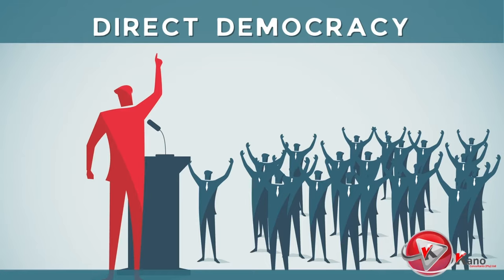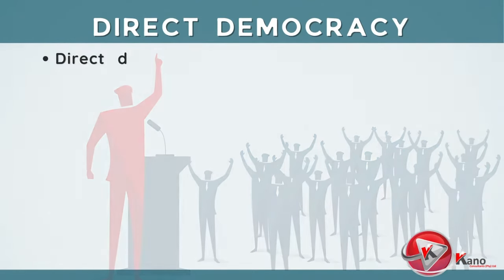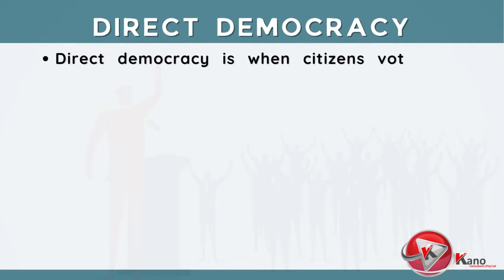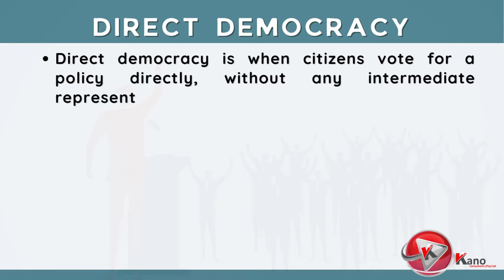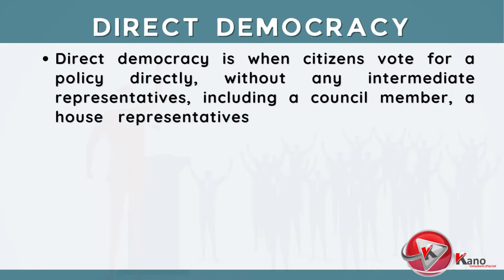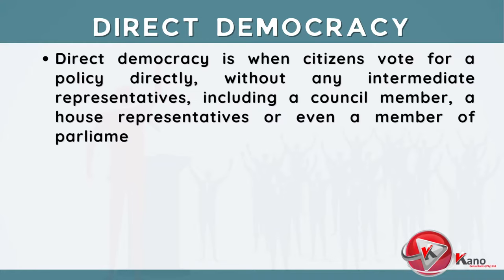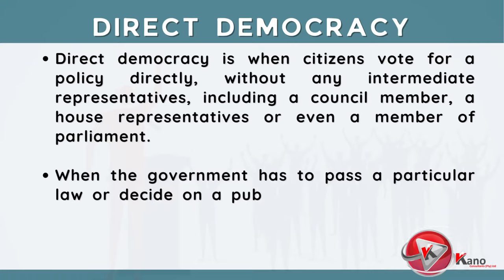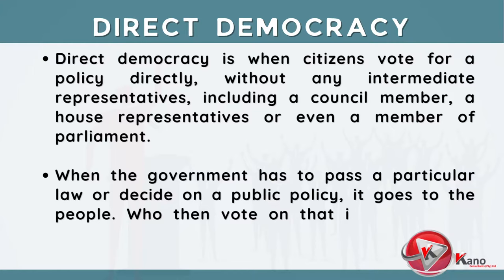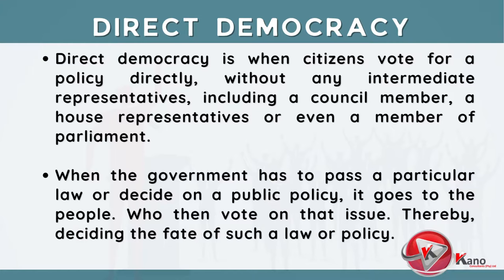The first type of democracy we will discuss is direct democracy. Direct democracy is when citizens vote for a policy directly, without any intermediate representatives, including a council member, a house representative, or even a member of parliament. When the government has to pass a particular law or decide on a public policy, it goes to the people, who then vote on that issue, thereby deciding the fate of such a law or policy.